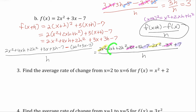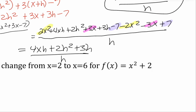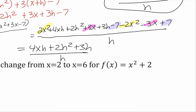There are three terms left, and each contains an h. So we write four x h plus two h squared plus three h, all over h. Now divide all those terms by h, and we're done. We get four x plus two h plus three. And that is the difference quotient for the quadratic.